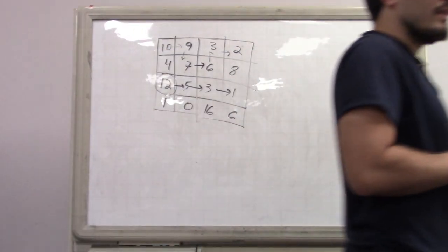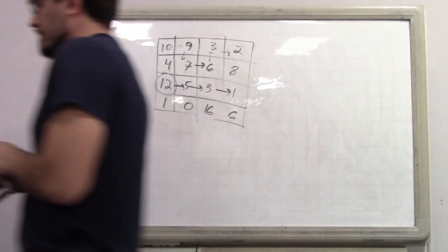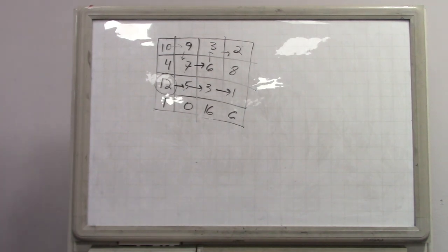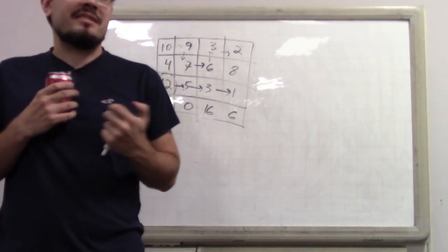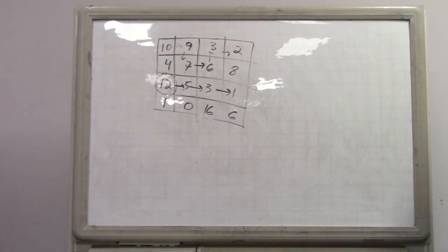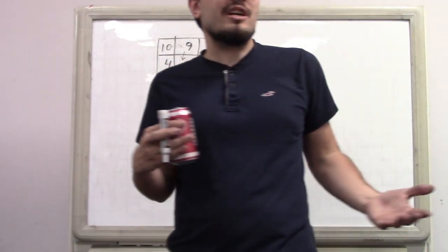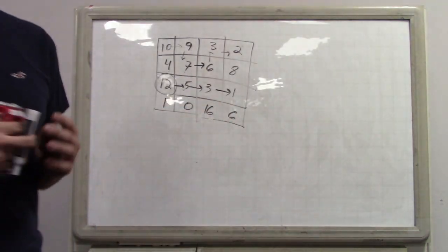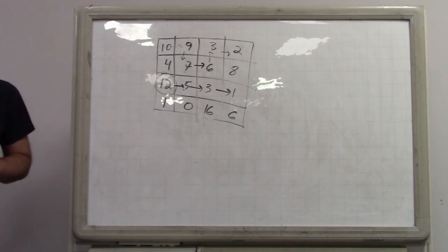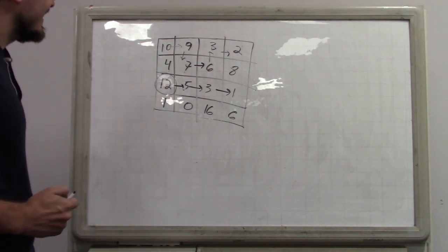This looks like a DFS problem. Well, it's a dynamic programming problem. Keep in mind that memoized DFS is top-down dynamic programming. Top-down dynamic programming is a DFS on the recursion tree with memoization at each node. What is recursion? Recursion is DFS — it traverses different function calls in a DFS-like manner. When you add memoization, DFS with memoization is top-down dynamic programming. So yes, it is a DFS problem — same thing.